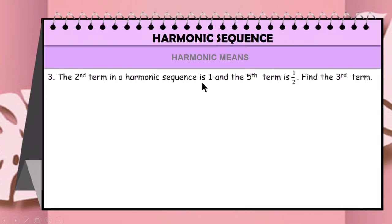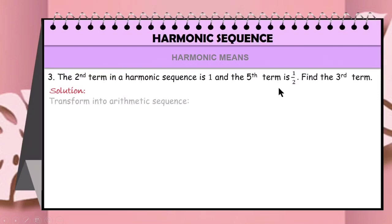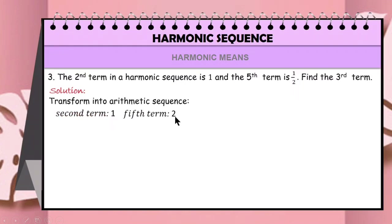Number 3. The second term in a harmonic sequence is 1, and the fifth term is 1/2. Find the third term. First, transform into an arithmetic sequence. The reciprocal of the second term 1 is also 1, and the reciprocal of the fifth term 1/2 is 2. We are to find the third term.